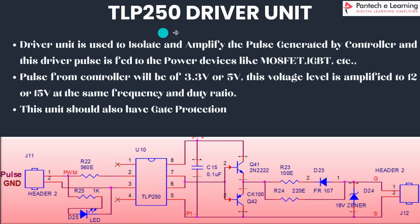TLP250 driver unit. This is the circuit for the TLP250 driver unit. The driver unit is mainly used to amplify and isolate the pulse which is generated by the controller. From the Arduino, the pulse is provided at around 3.3 volt to 5 volt, which is not enough to switch on power devices like MOSFET and IGBT. To amplify that pulse we are using the driver unit. The TLP250 IC amplifies and isolates the pulse up to 12 to 15 volt with the same frequency.